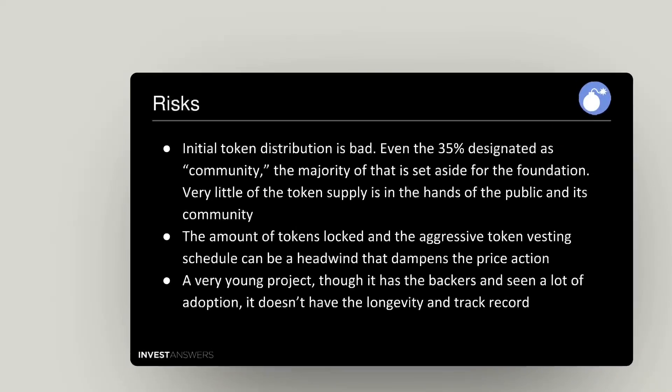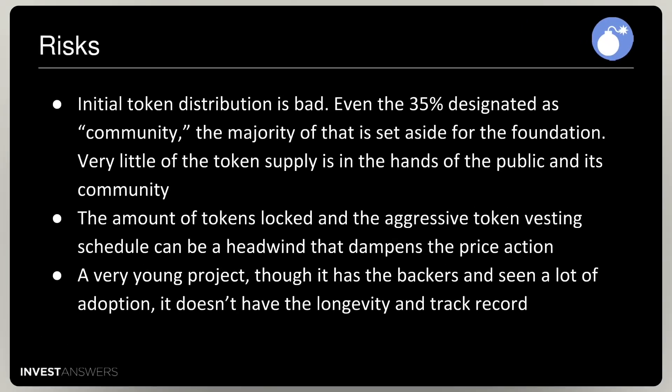Let's talk about risks — one of the most important areas. Risks and tokenomics are where people should focus, and they don't. The initial token distribution is bad. Even the 35% designated as community has the majority set aside for the foundation, with very little in the hands of the public. The amount of tokens locked and the aggressive token vesting schedule may be a headwind for price action.